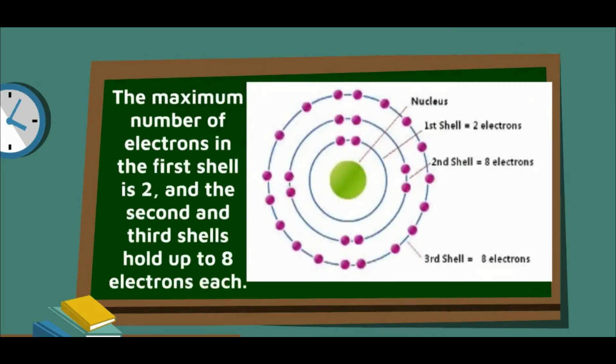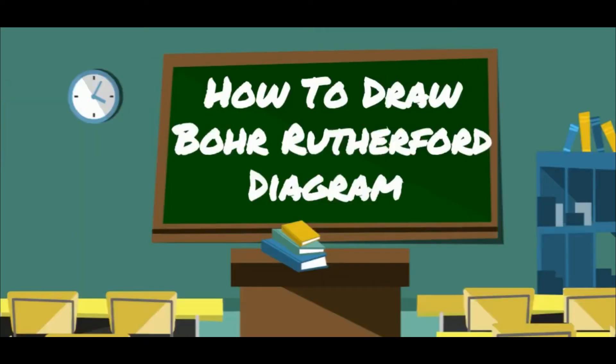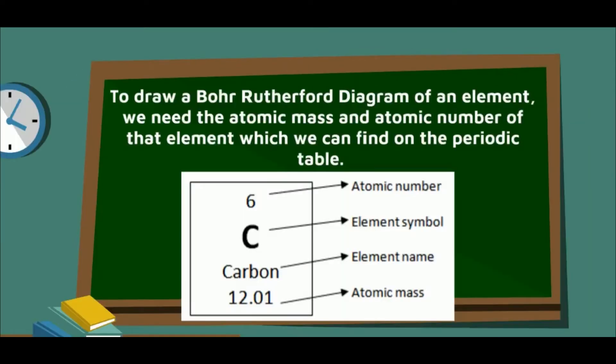The maximum number of electrons in the first shell is 2, and the second and third shells hold up to 8 electrons each. In the Bohr-Rutherford Diagram of an element, we need the atomic mass and the atomic number of that element, which we can find on the periodic table.